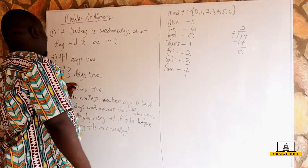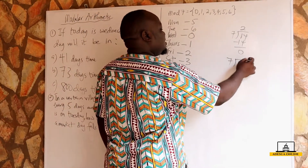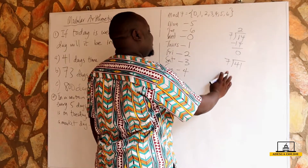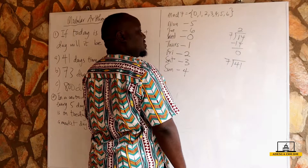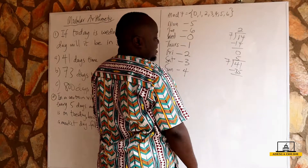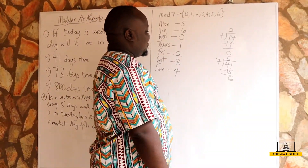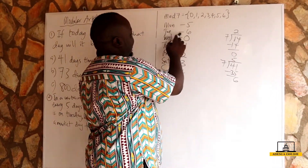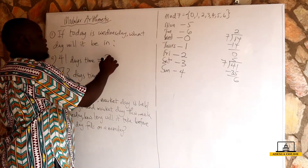With this same method, what day would it be in 41 days time? I'm going to divide 41 by seven. Seven goes into 41 six times — that gives 42, wait, 7 times 6 is 42, so 7 times 5 is 35. Subtracting: 41 minus 35 gives a remainder of six. A remainder of six tells us it will be on a Tuesday.